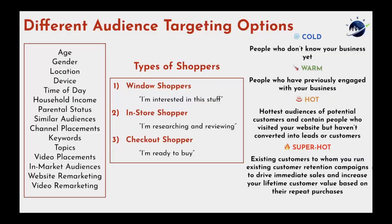We've talked about a number of different ways you can target: age, gender, location, device, time of day, household income, parental status, similar audiences, channel placements, keywords, topics, video placements, in-market audiences, website — that's the superpower of YouTube. You can target so many different ways: window shoppers, in-store shoppers, or checkout shoppers as Tom Breeze calls them — people that are interested, people that are researching and reviewing, or people that are ready to buy. People need to know, like, and trust your brand.